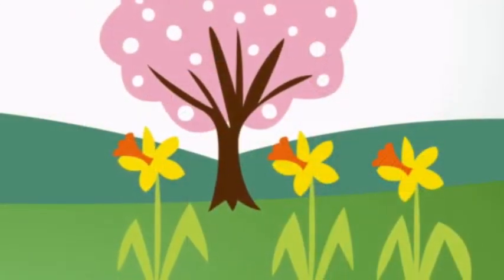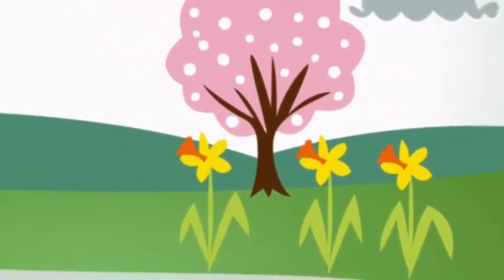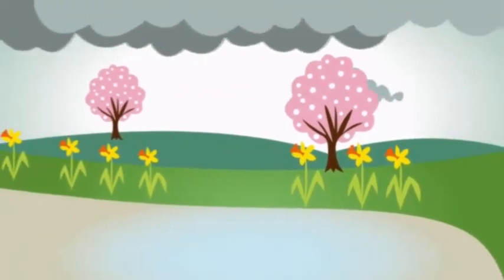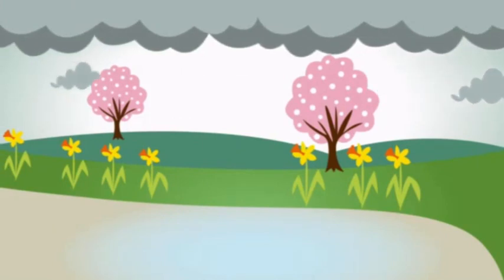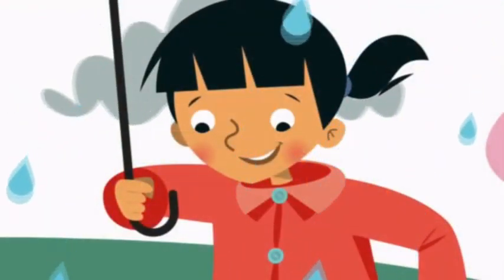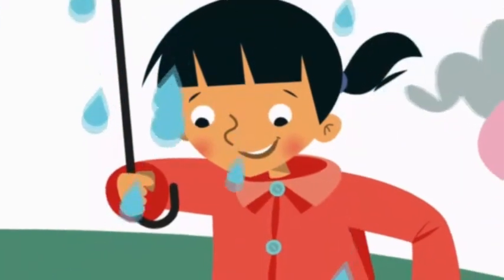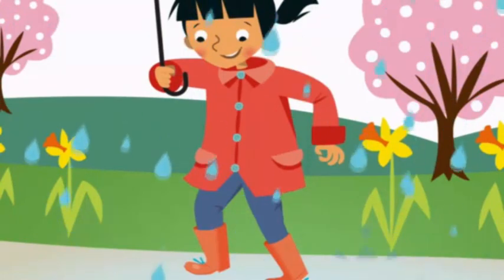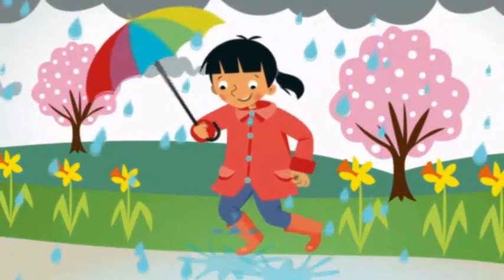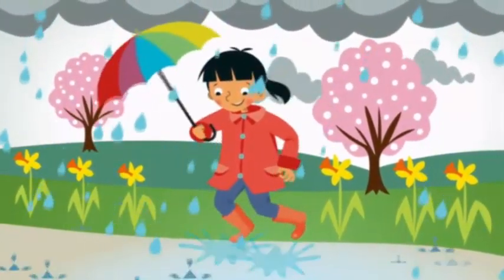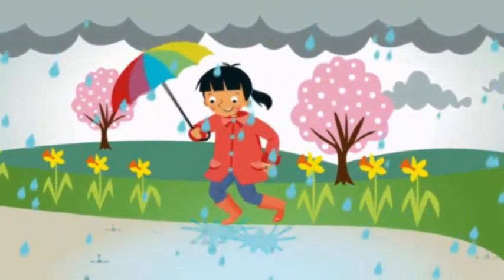It's spring. Look at the trees and the flowers. What's the weather like? Sometimes it's cloudy and sometimes it's rainy. Can you see the girl? What's she wearing? She's wearing boots. What's she doing? She's jumping in the puddles. Splash, splash, splash!